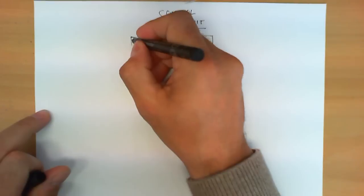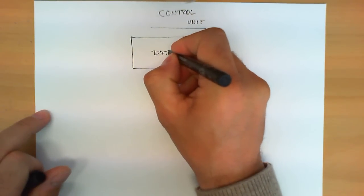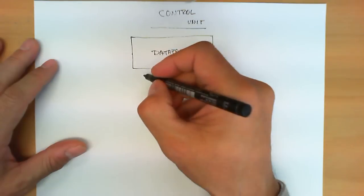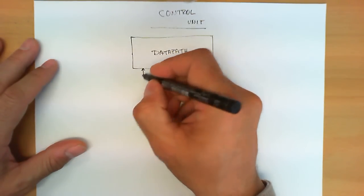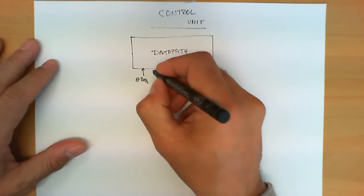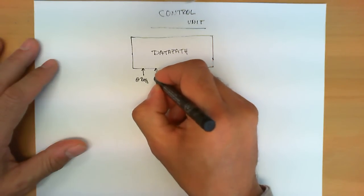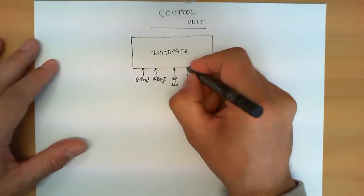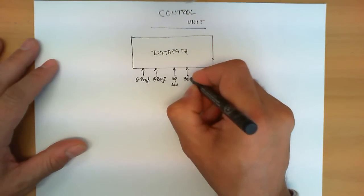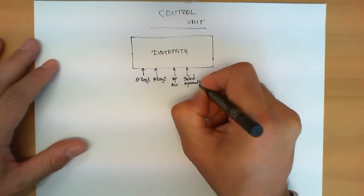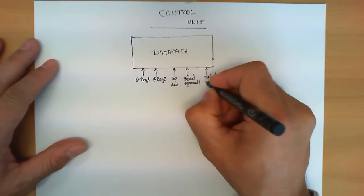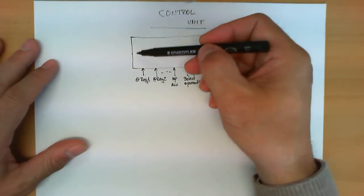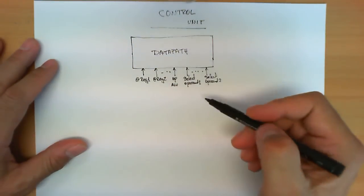Let's first consider what was the purpose of the data path. This circuit was in charge of processing data and performing certain operations, but it also had certain control signals that needed to be provided, like the address of the register to be read — sometimes two addresses — another was the operation in the ALU that needs to be executed, and how to select operand 1 or operand 2 of the ALU. We can have many more signals that change the behavior of the rest of the CPU, namely the data path.